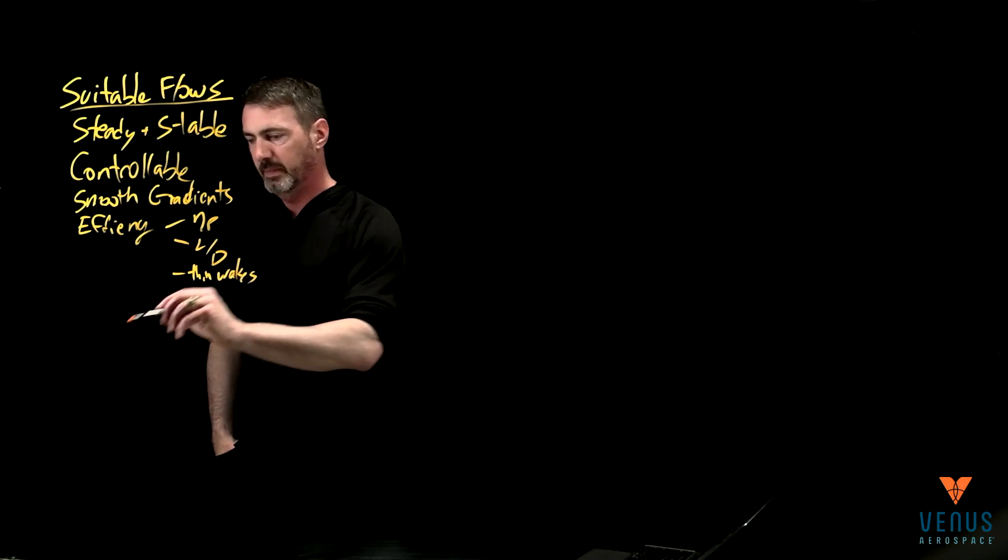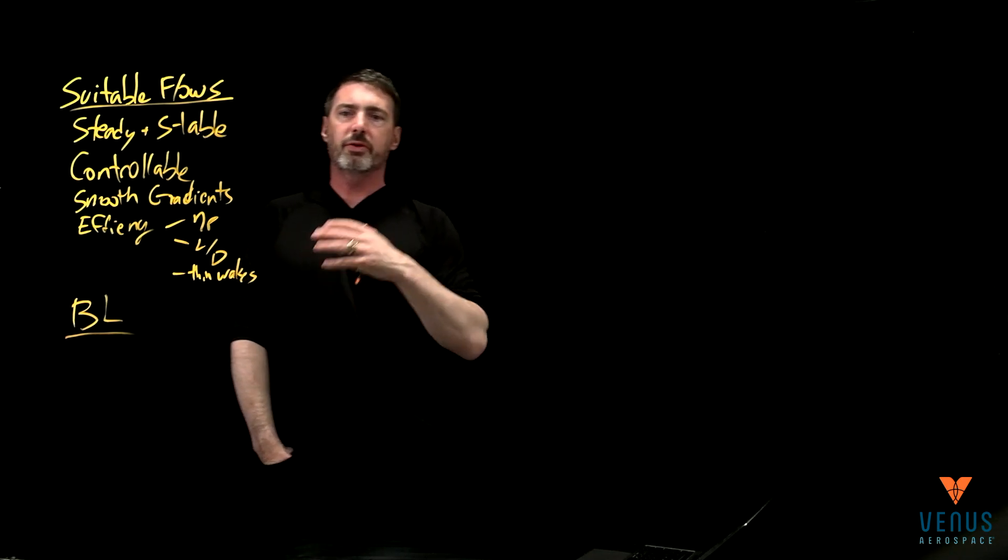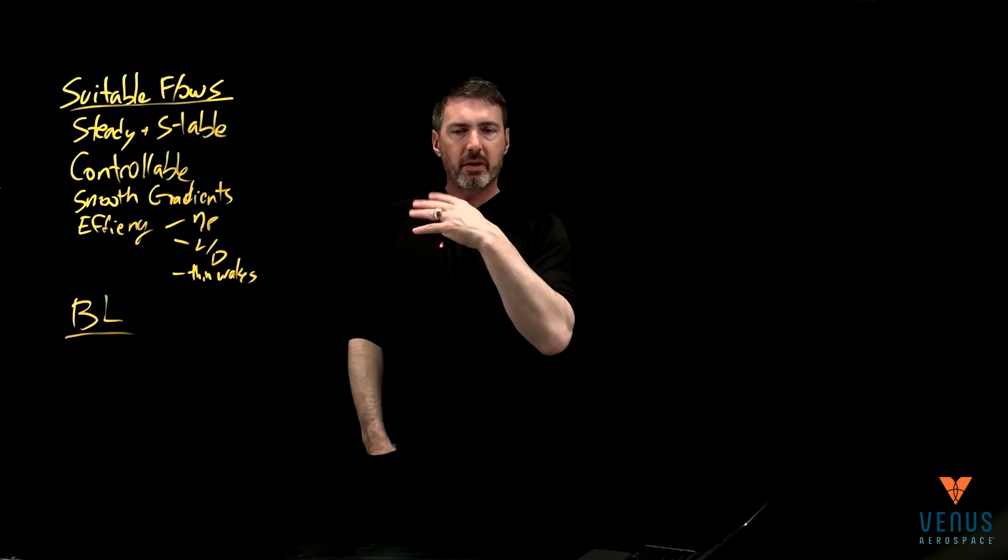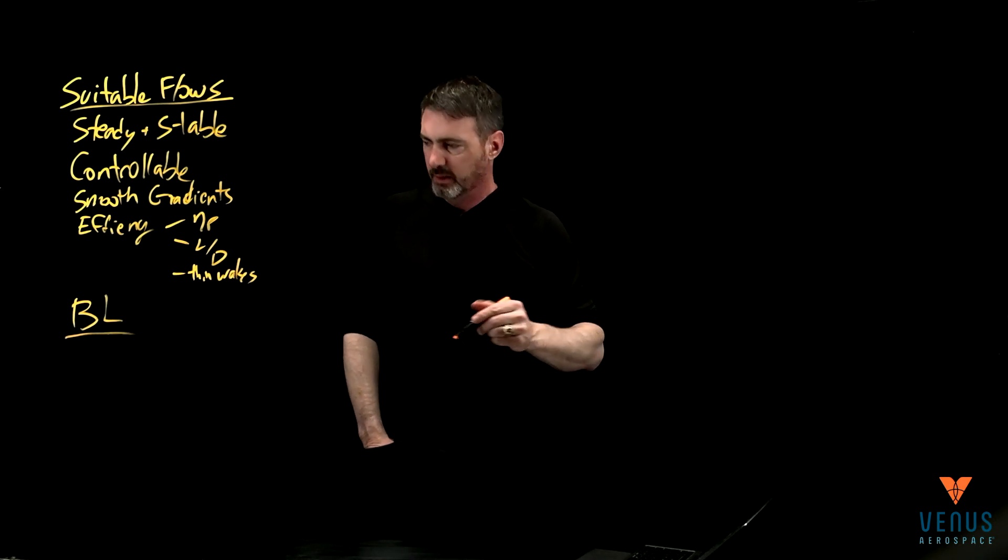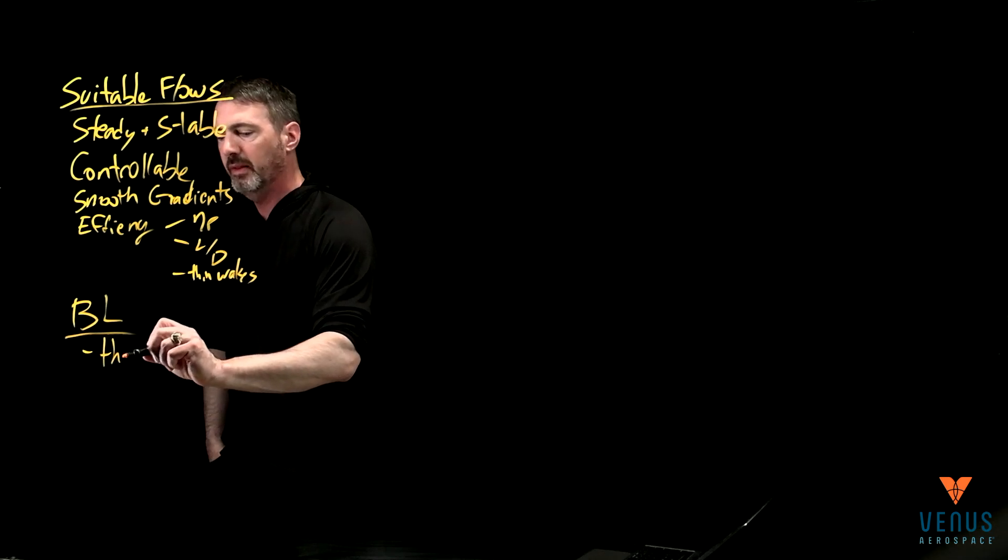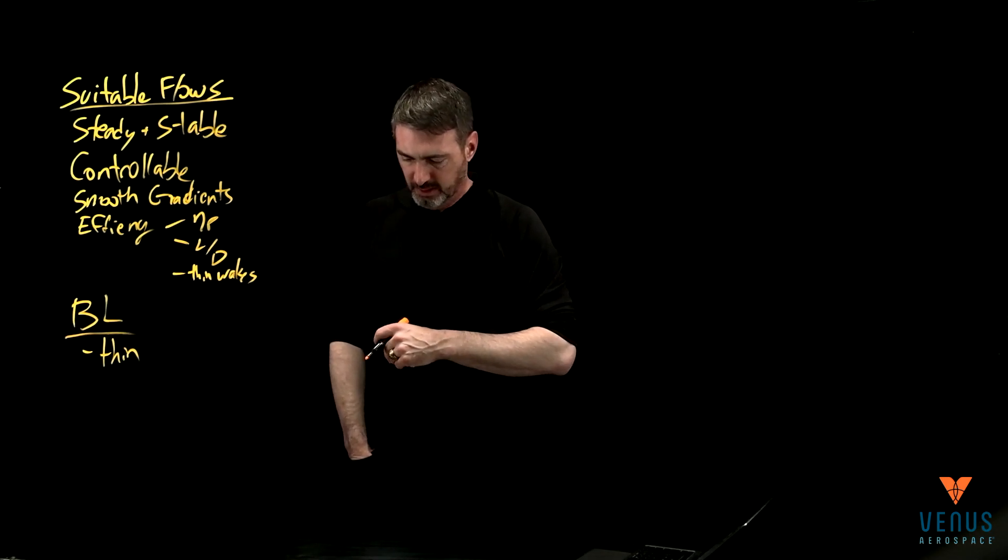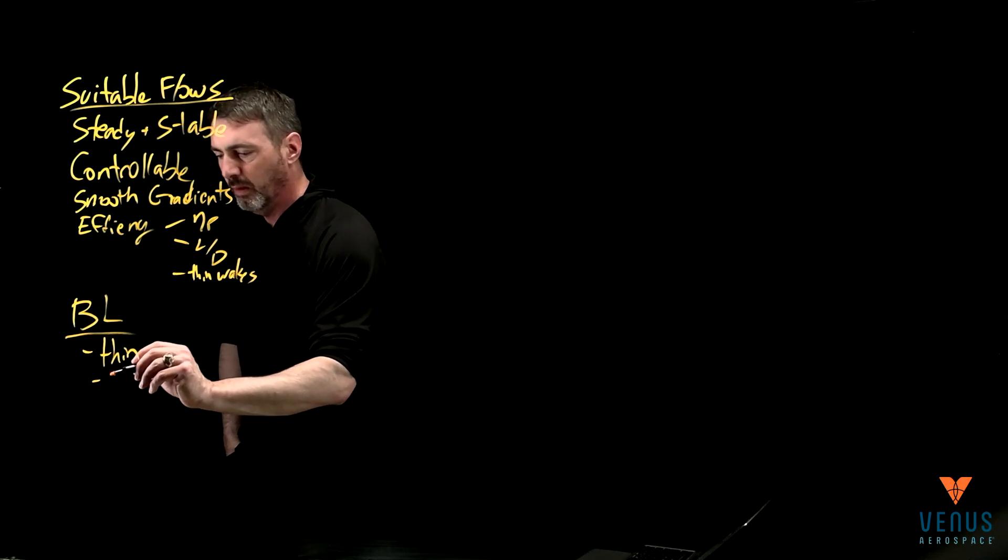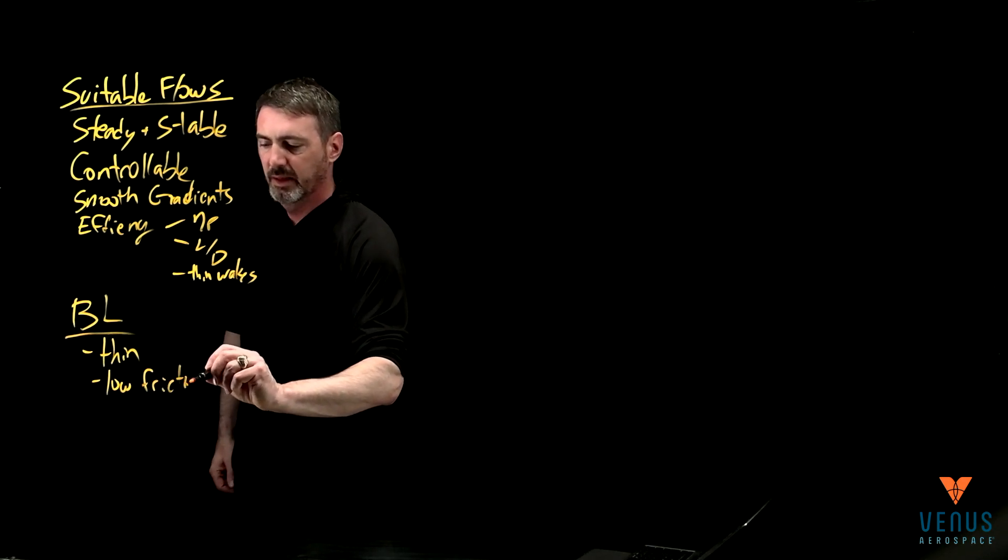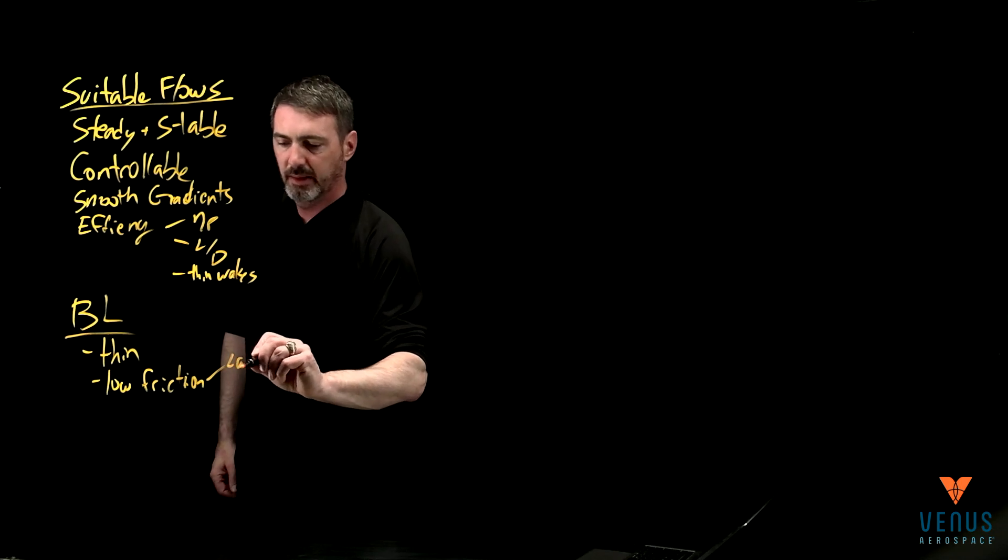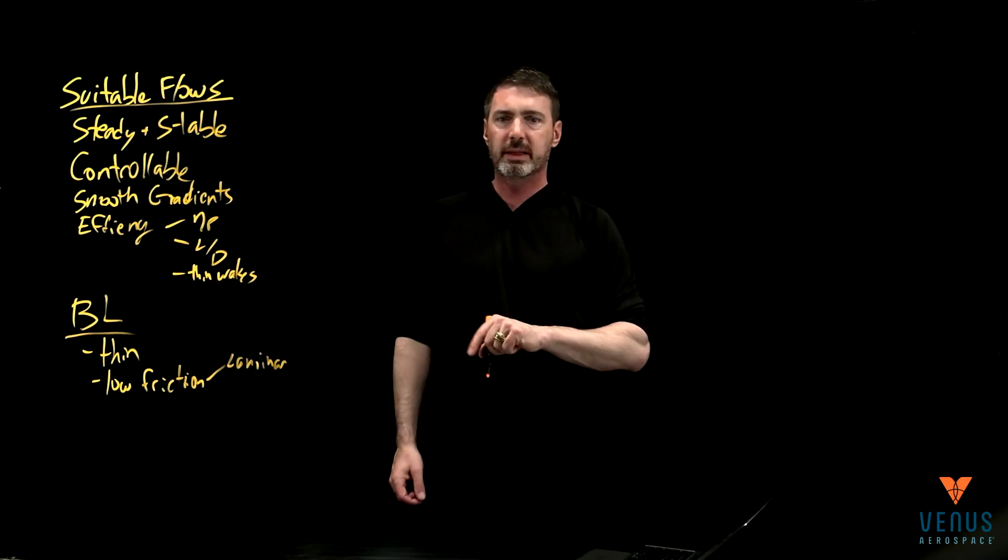And then boundary layer is kind of the next piece, right? This is all true. And then when we get into the boundary layers, when we get into the viscous portions of the flow, we want to have a few features of these boundary layers, mainly that they're thin. It's a little bit back to drag, maybe that's kind of a parallel statement. But low friction is nice, and we're going to see that, yes, laminar is what we want, but it's not really necessarily achievable.